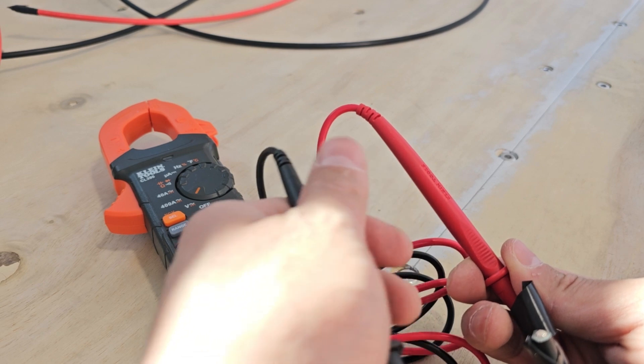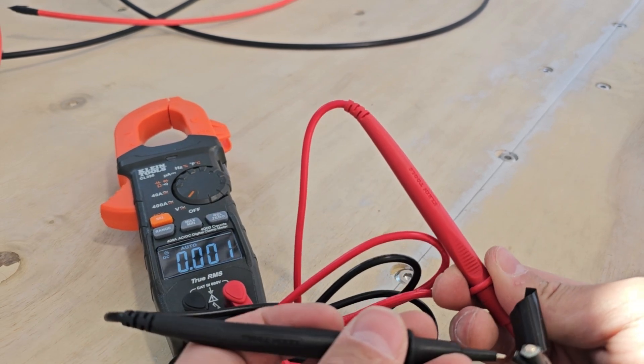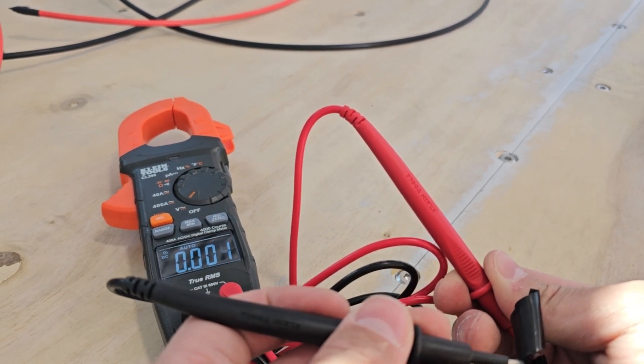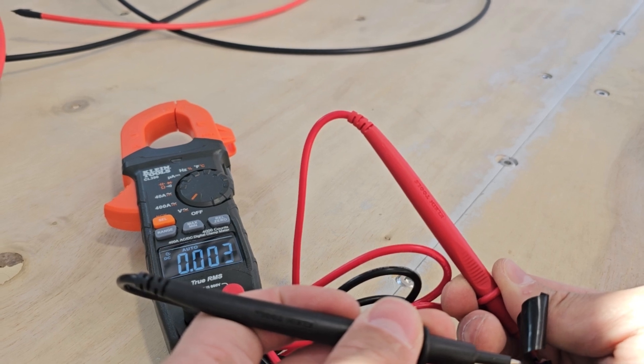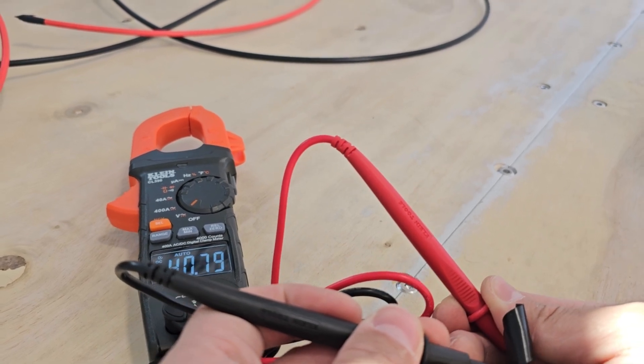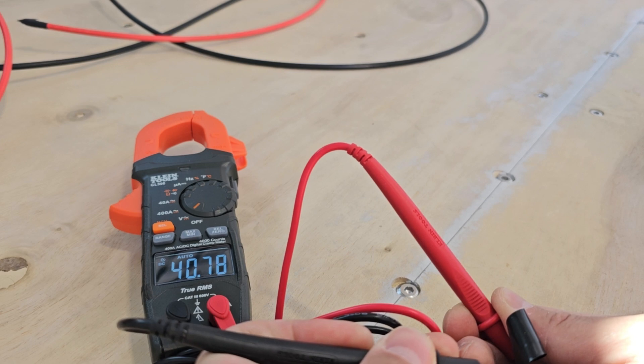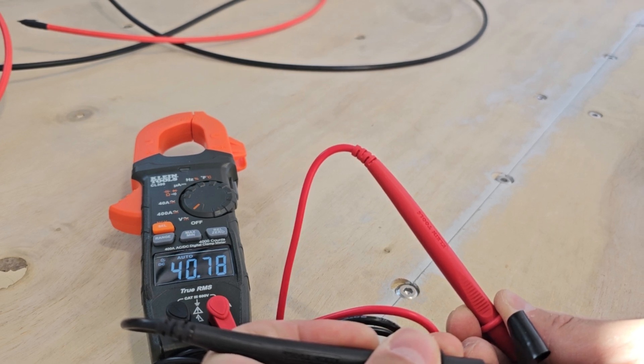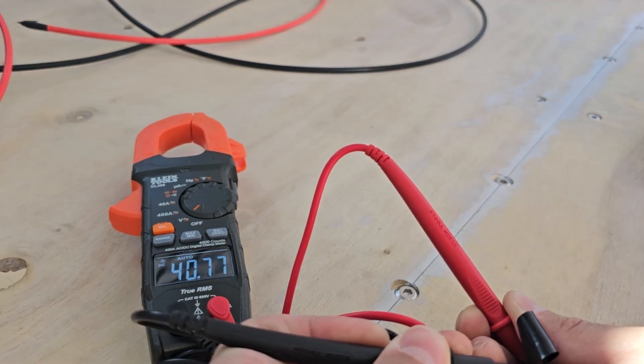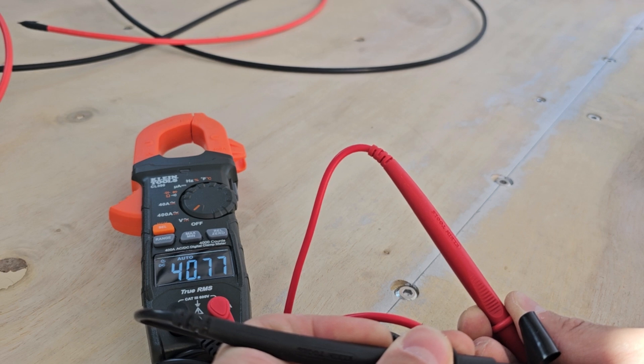Let's see if I can get this to stay. Here we go. 40.78 volts on the 250-watt string of panels, wired in series.